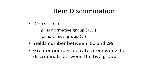And so if you can build your test based on those items — items that are sensitive to that impairment but don't have big discrimination values that are sensitive to level of exposure, for example, or for age of first language exposure — then you have a better chance of developing a measure that is going to help you to make distinctions between your clinical and non-clinical group.